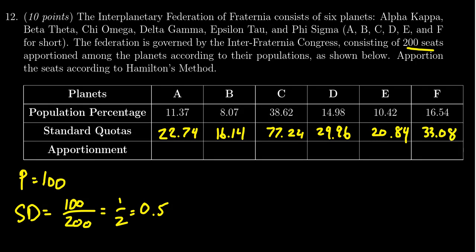With this, Hamilton's method gives everyone their lower quota. So you're going to give state A 22 seats, state B gets 16, state C gets 77, state D gets 29, state E gets 20, and state F is going to get 33. But then look at how many we have right there. If you take 22 plus 16 plus 77 plus 29 plus 20 plus 33, that adds up to be 197.